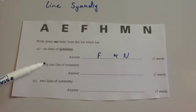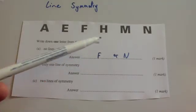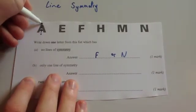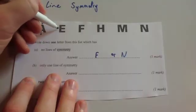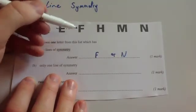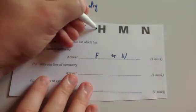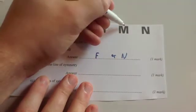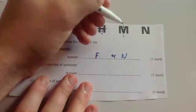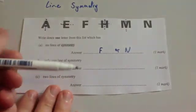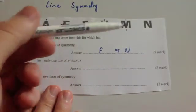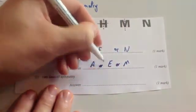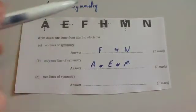The next part asks for one letter with only one line of symmetry, and another with two lines of symmetry. Drawing the lines of symmetry onto these shapes: A would have a vertical line of symmetry. E would have a horizontal line of symmetry. F doesn't have a line of symmetry. H has two — a horizontal and a vertical line of symmetry through the middle. M has a vertical line of symmetry through the middle. And N doesn't have one. So for only one line of symmetry, you could have A, E, or M. And two lines of symmetry has to be H.